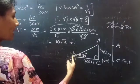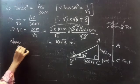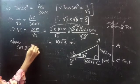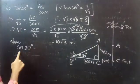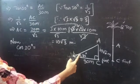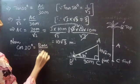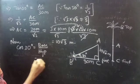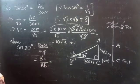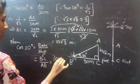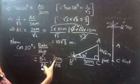Now we have to find the value of AB. To find AB, we use cos 30 degrees. Cos 30 degrees equals adjacent by hypotenuse, or base by hypotenuse, which equals BC divided by AB, which equals 30 meters by AB. Since BC equals 30 meters, replace BC by 30 meters.